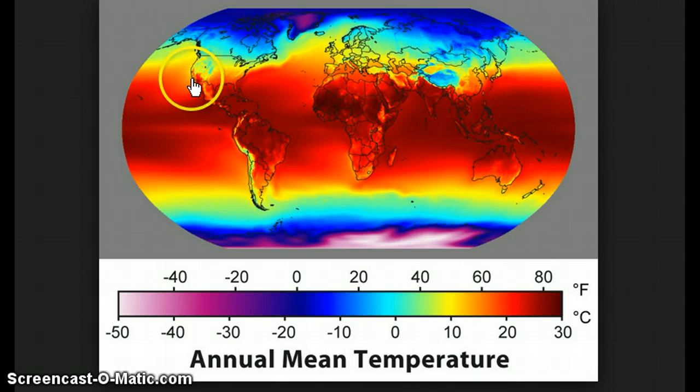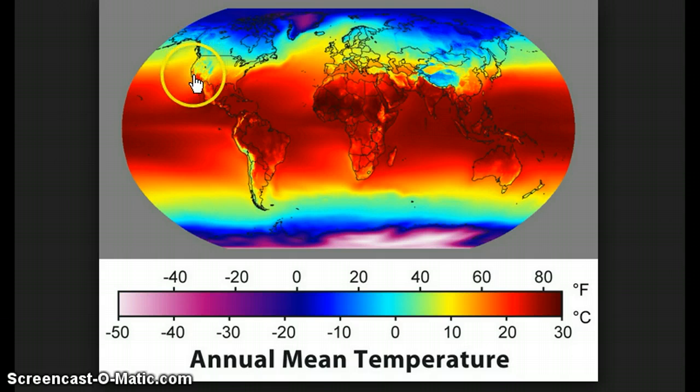And if we look over here, we can see that yellow current coming down the coast and the colder temperatures on the west coast. The temperature of ocean currents also affects precipitation. Because warm water evaporates easier, cities that are on warm ocean currents receive more precipitation.